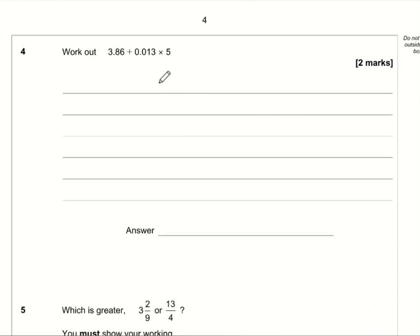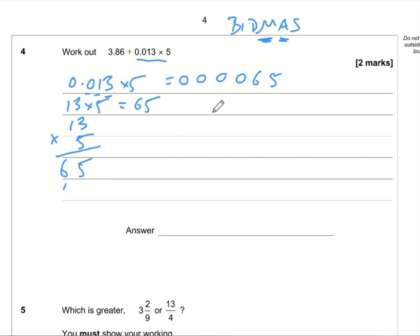Question number four, work out 3.86 plus 0.013 times five. So this is a question about BIDMAS. You just need to remember to do the multiplication before you do the adding. So 0.013 times by five. First of all, I would forget that. What is 13 times by five? So I would write 13, do a column method. Three fives are 15, carry one. One five is five plus one is six. So 13 times five is 65. So 0.013 times five is going to feature the figures six and five, but it needs to have three decimal places. So 0.013 times five is 0.065.